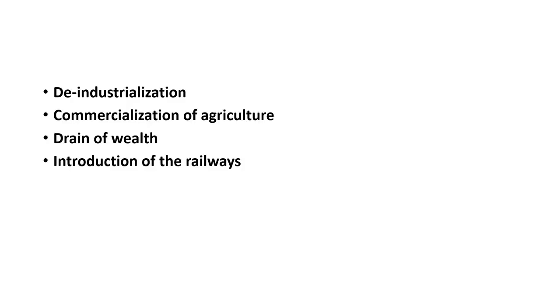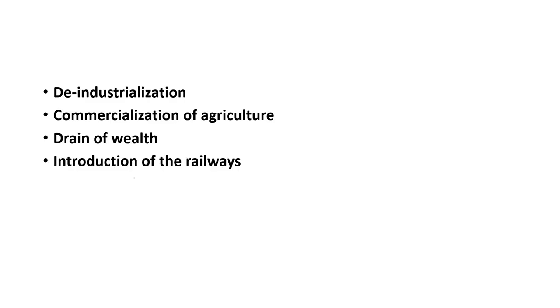This lecture is divided into four sessions. Under the first subsection, we will be studying de-industrialization as one of the main impacts of British rule on the economic front. Under the second subsection, we will be discussing commercialization of agriculture. In the third subsection, we will be studying drain of wealth. And in the last session, we will be discussing the introduction of the railways.